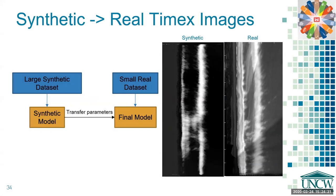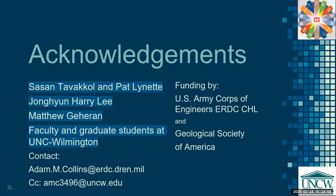Finally, the goal is to use transfer learning with all of these inputs discussed on real images of the surf zone. Because of the similarity between raw Solaris images and raw images of the surf zone, we're hoping to exploit the higher-level feature extraction learned by the model trained on the synthetic data set to then fine-tune with the smaller real data sets that are available. I would like to acknowledge Hassan Tavakal and Pat Lynette for creating the Solaris model, Dr. Jung-Yung Harry Lee for his assistance, Matthew Gayron for some of the bathymetry generation scripts, as well as the faculty and graduate students at UNC Wilmington for all of their support.